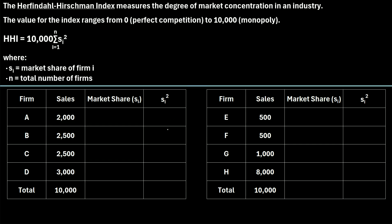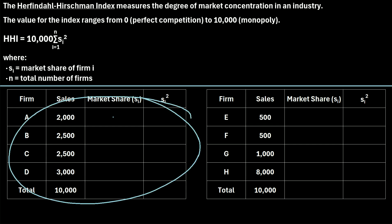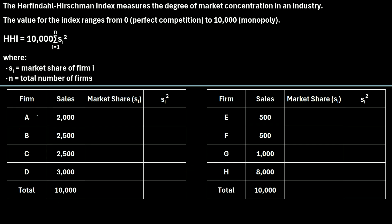I have two different examples of two different industries, and let's go ahead and calculate the HHI for each. In this first example, we have four firms — A, B, C, and D — and we can see the total sales made by each firm. The total sales made by all four firms is 10,000. The first thing we need to do is figure out the market share of each firm, which is simply the total sales by a specific firm divided by the total sales in the entire industry.